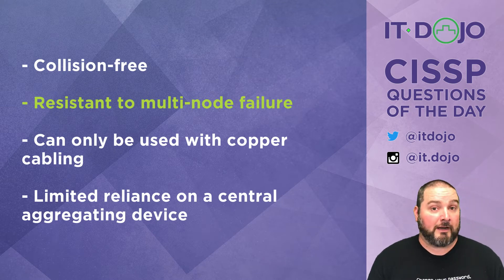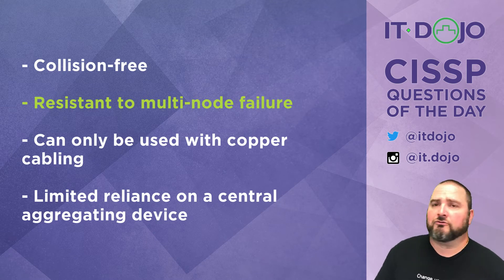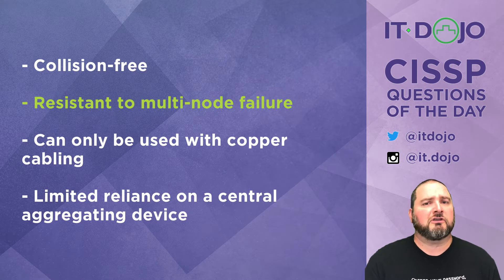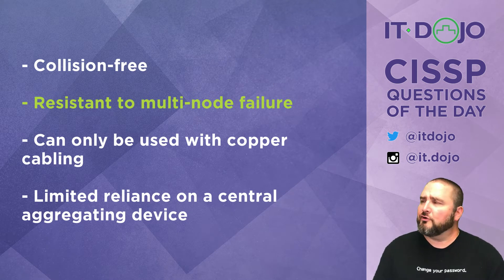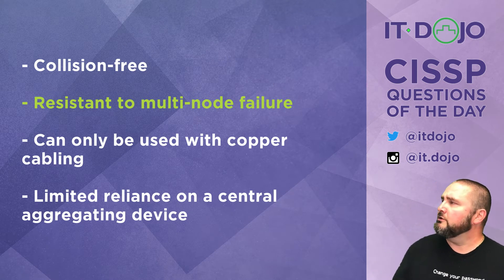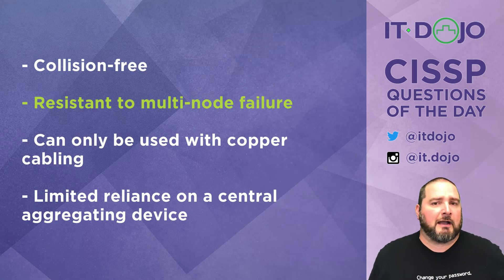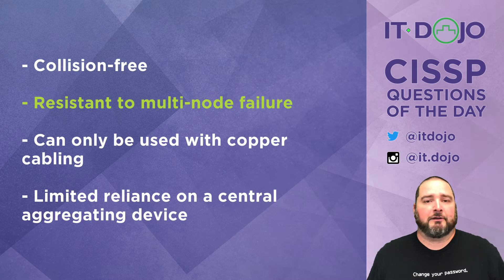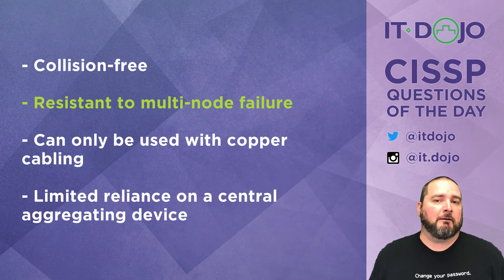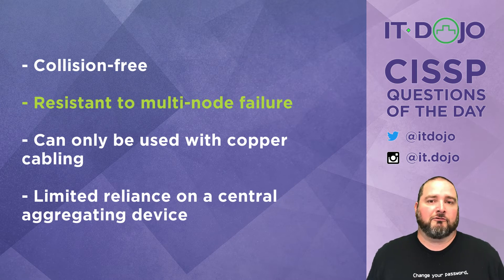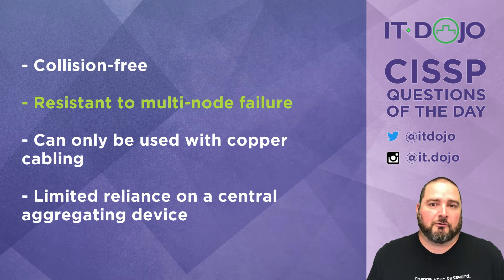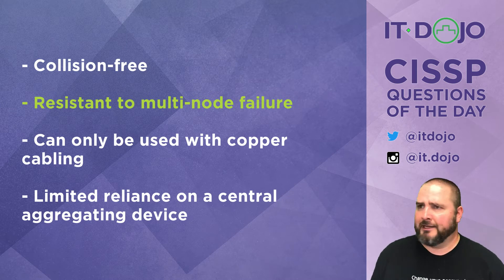Contrast that with older bus topologies where everybody's connected to a shared bus — if something bad happens to the bus, everybody's disconnected. So answer choice B is correct. The third choice says you can only use a star topology with copper cabling — no, that's just some junk I made up to confuse you. Negative.